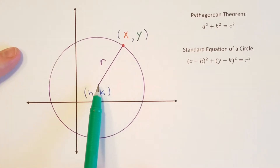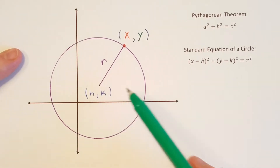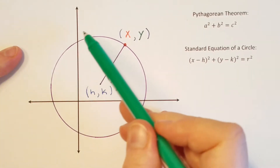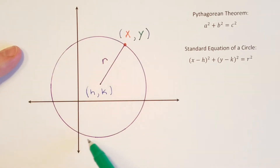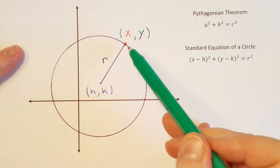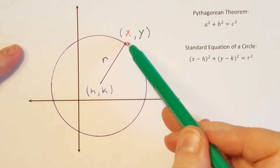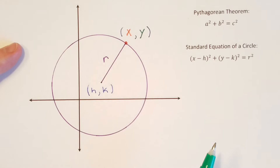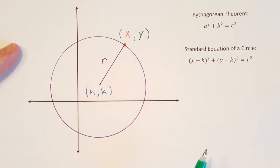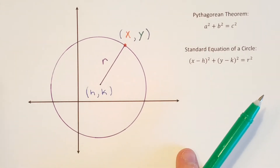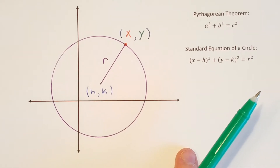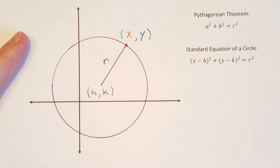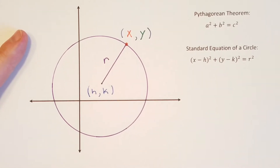So if I start here at this point h,k and I go the same distance all the way around the circle, every point that lies on this line is the same distance from h,k. If we put all those points together, they create the actual circle itself. So this purple line represents all the points that are r units away from h,k.